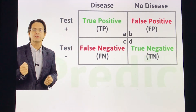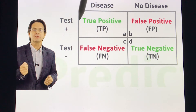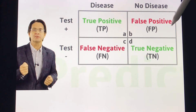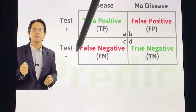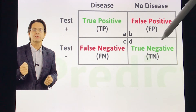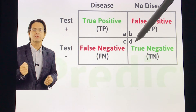Here's an example of a two-by-two table for diagnostic testing. We have those with disease and those with no disease, and we have a positive test and a negative test. Those with disease who test positive are the true positives — letter A. Those who test positive but do not have the disease are the false positives — letter B. Those who have the disease but test negative are the false negatives — letter C. Those without the disease who also test negative are the true negatives — letter D.